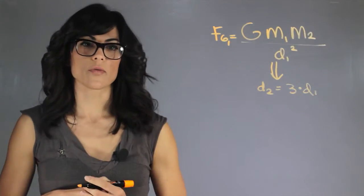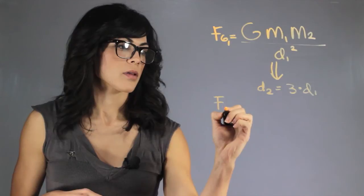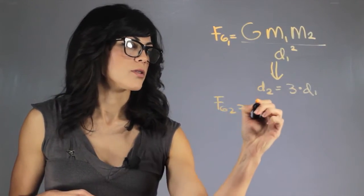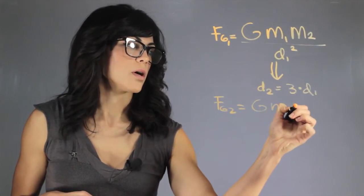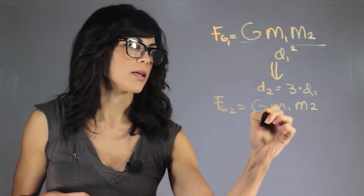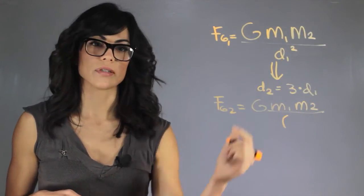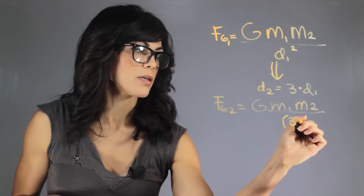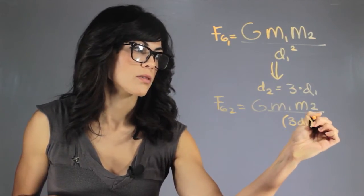Now let's plug in our force equation. So we have G m1, the mass of the second planet, and now instead of the distance d1 we have the distance d2 which is 3d1 squared.